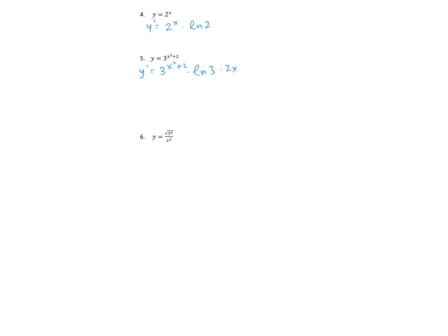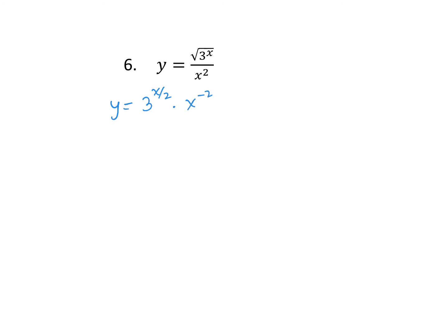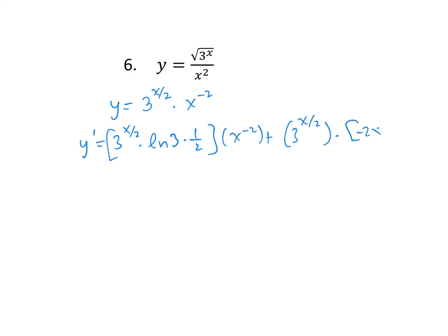In question 6 we have a quotient, which I'll convert to a product rule. I change the cube root of 3 to the power x to 3 to the power x over 2, and change x in the denominator to x to the negative 2. The derivative of 3 to the power x/2 is: keep 3 to the x/2, times ln(3), times the derivative of x/2 which is 1/2. Plus the same exponential times the derivative of x to the negative 2, which is negative 2x to the negative 3.